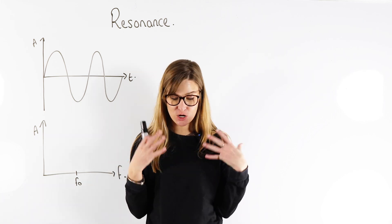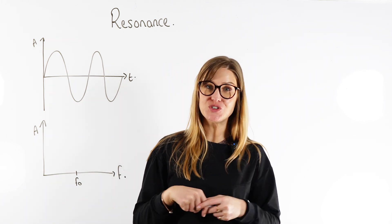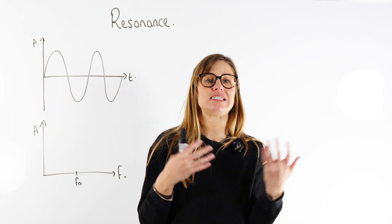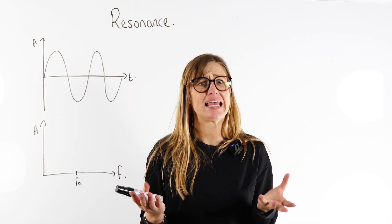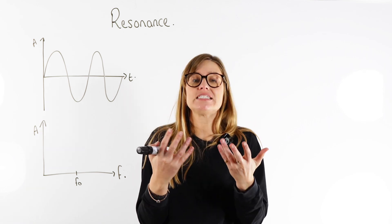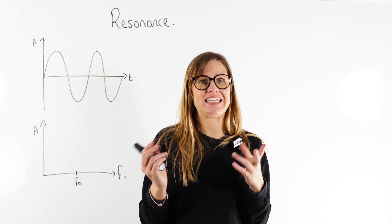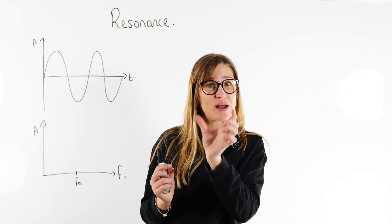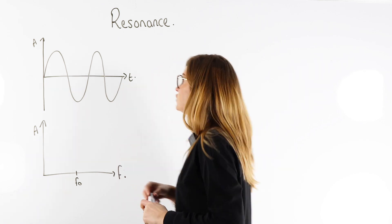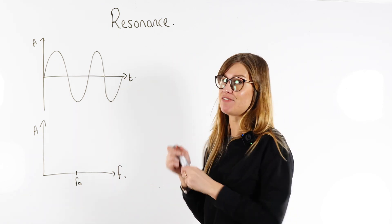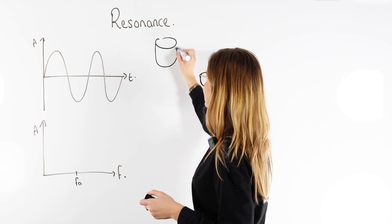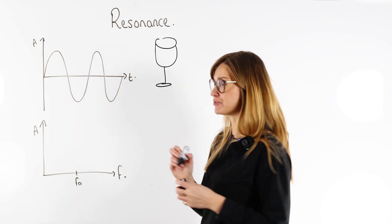So resonance — loads of you already know about it because a lot of you have seen those movies about opera singers where people are singing and the glass shatters. That's really unlikely to happen because it's really hard, even for an opera singer, to sing at the exact right frequency. But it can happen. So what we're looking at here is what resonance is, and I think the easiest way to explain it is to think about our glasses and why they might shatter.